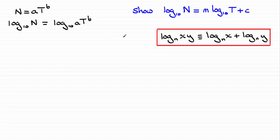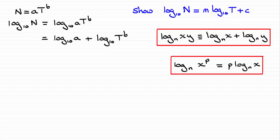Using that rule, I can express this as the log of a in base 10 plus the log of t to the power b in base 10. Next, I need to look at this term and use the power rule for logs. As a reminder, the log of x to the power p in base n is the same as p times the log of x in base n — you just bring the power to the front of the log.